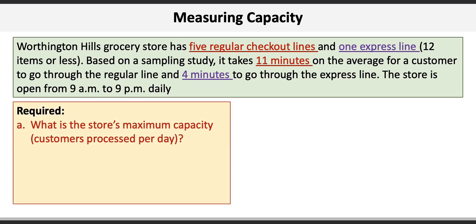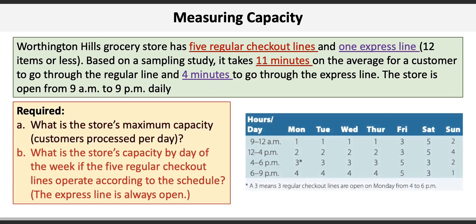There are two requirements for the problem. Requirement A asks us to determine the store's maximum capacity, or customers processed per day. Requirement B asks us what the store capacity by day of the week is if the five regular checkout lanes operate according to a schedule, assuming the express lane is always open.